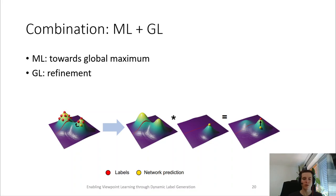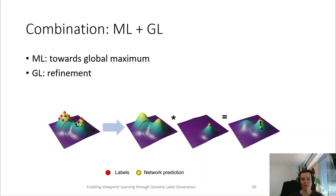We use the Gaussian labels to move the prediction from the boundary of the label clusters to the center, where we find the global maximum. Note, while we demonstrated the dynamic label approach on the problem of optimal viewpoint selection, it can be applied to any deep learning task which involves label ambiguity.